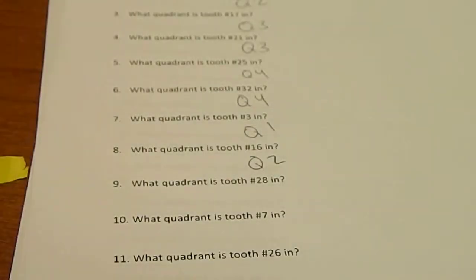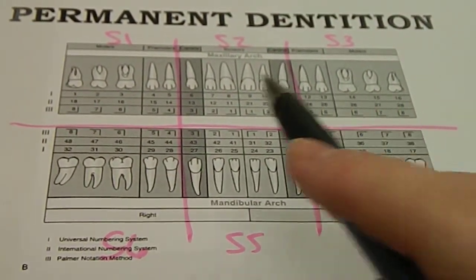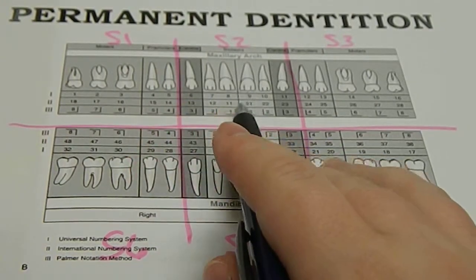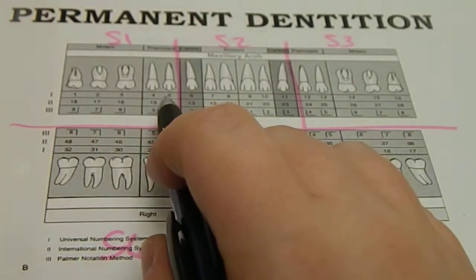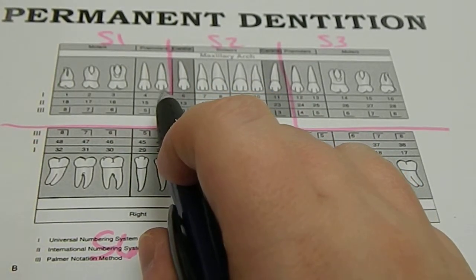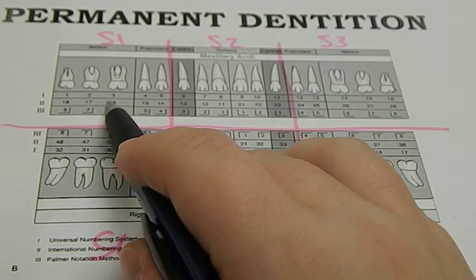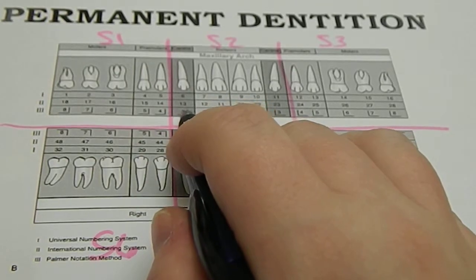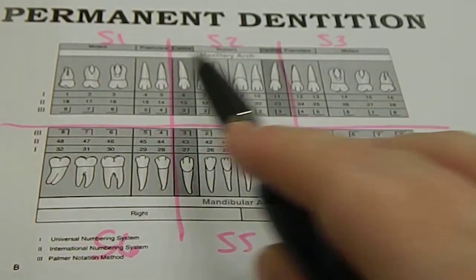Now we're going to talk about sextants. Sextants are just like quadrants but instead of four parts, we're dividing the mouth into six parts by tooth type: posterior, anterior, posterior on top and bottom. Our posterior teeth have the chewing sides — the premolar and molar — these are the grinding food types. Anything that cuts or tears are considered anterior teeth.